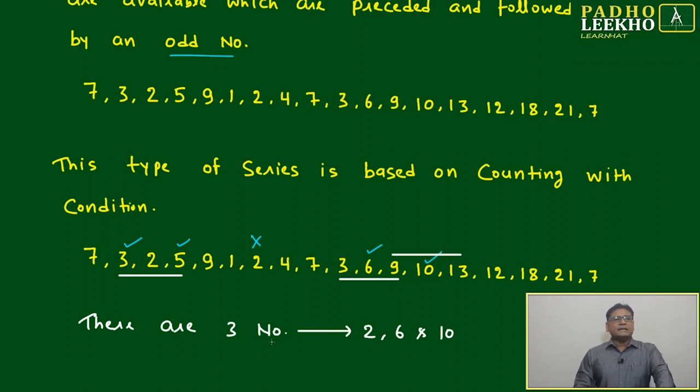Total, we can say, how many even numbers are there? One, two, and three.